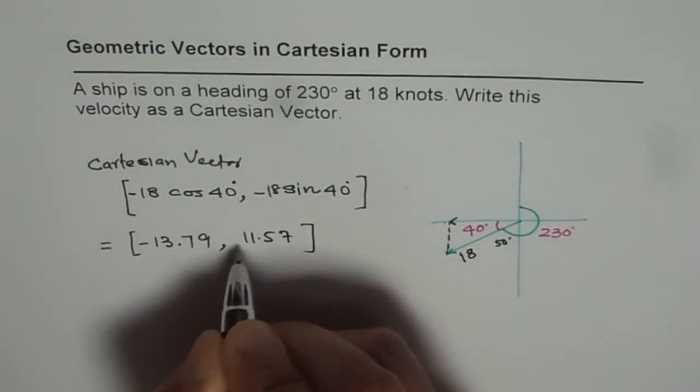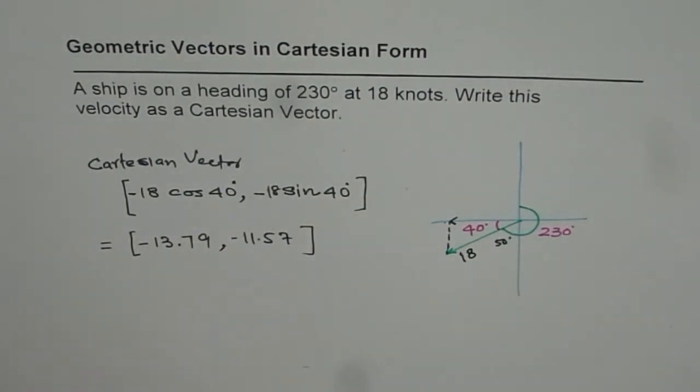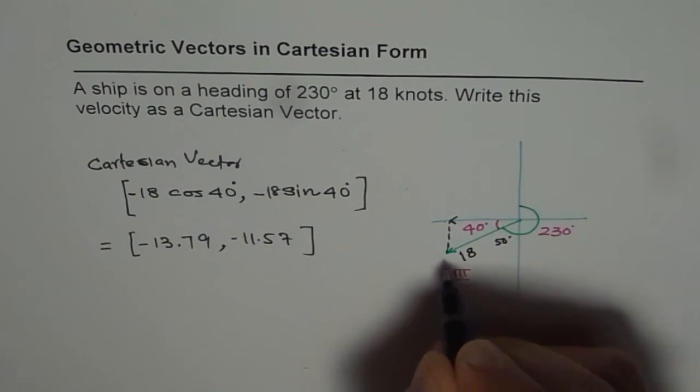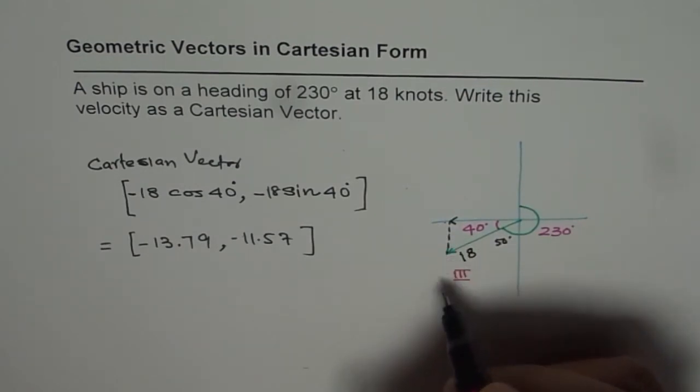Both are negative as the ship is heading in quadrant 3. So in quadrant 3, both x and y coordinates will be negative.